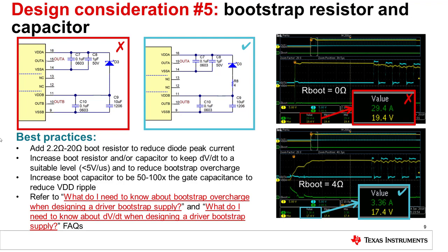The bootstrap capacitor also plays a critical role in proper bootstrap supply operation. Sizing the bootstrap capacitor to be 50 to 100 times the gate capacitance is necessary to not only power the high-side FET in a half bridge topology, but to reduce overall VDD ripple. In addition, bootstrap overcharge and dV/dt across the bias supply of the driver need to be taken into account, and properly selecting bootstrap capacitor and resistor values to maintain these parameters within operable levels is critical for optimal performance. For further details on considerations for R-boot and C-boot in bootstrap supply design, you can refer to the attached FAQs.